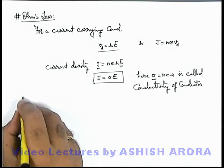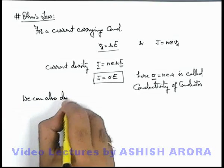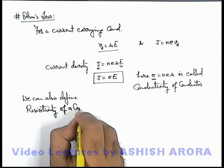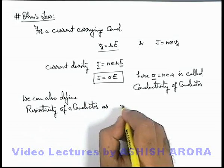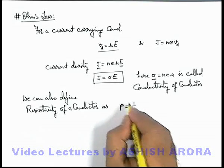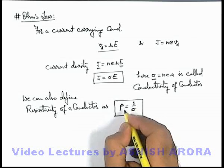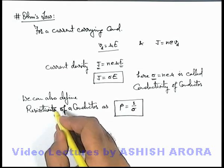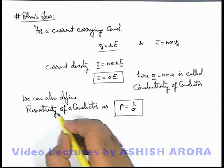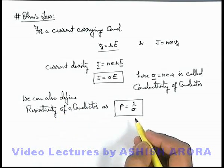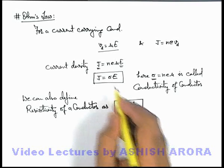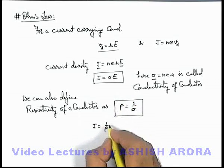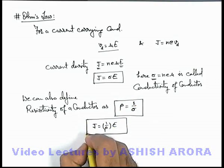We can also define another term: resistivity of a conductor. Resistivity is denoted by the symbol ρ and it is defined as the reciprocal of conductivity. Resistivity is the characteristic of a metal by which we come to know how much the metal or conductor can resist the flow of charges. Since it is the reciprocal of conductivity, current density can be written as J = (1/ρ)E.